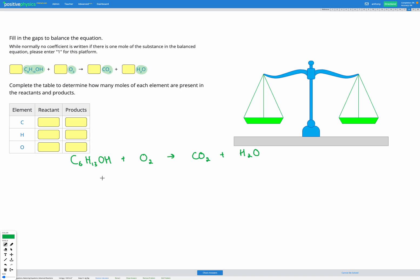Next I need my tables, so I should have my elements, I should have my reactants, and I should have my products. My elements are C, H, and O.